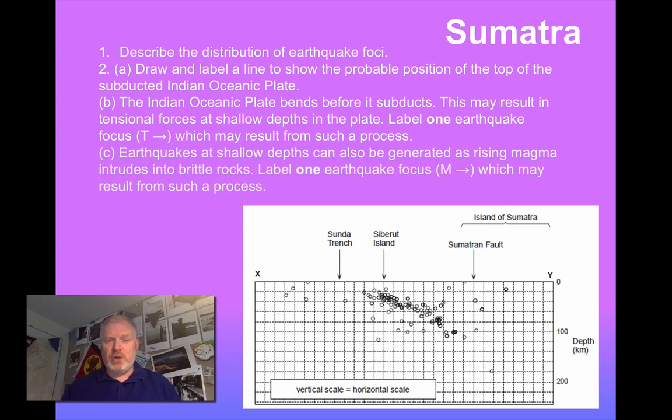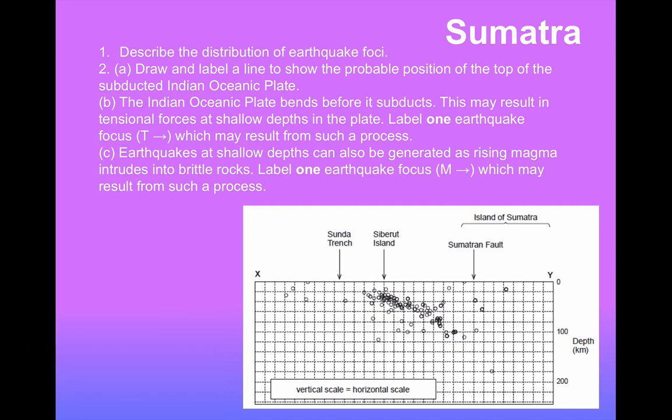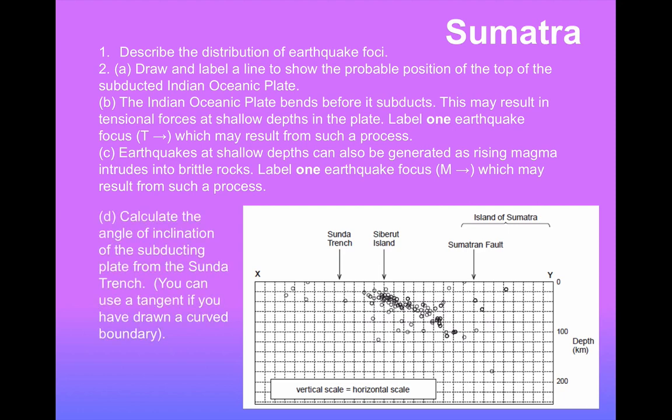As well as tension earthquakes, we're going to get some magmatic earthquakes. A subduction zone is going to make magma. When that magma moves, it's going to create earthquakes. Where are they? And then finally for this diagram, can you calculate the angle of inclination? How steeply is this plate being subducted? If you draw a curved line to answer question 2a, draw a tangent on that to work out the angle.